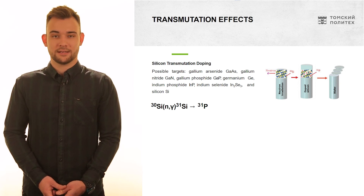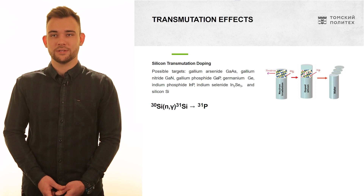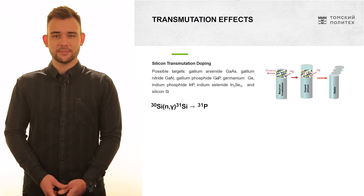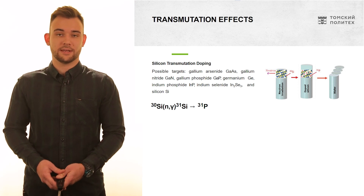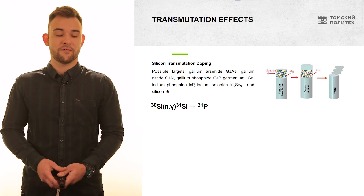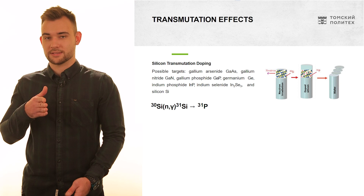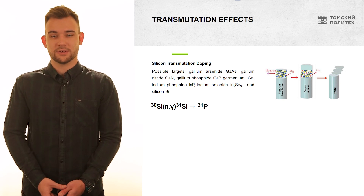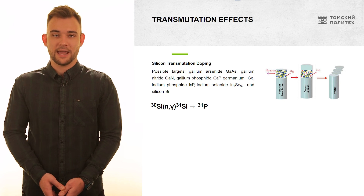Silicon itself is a non-conducting material. But when you irradiate it with a flux of neutrons, part of the silicon is turned into phosphorus. Phosphorus has one free electron, so that allows current to pass through. This material then turns into a semiconductor and can be used for electronics applications.